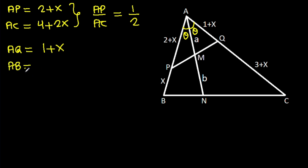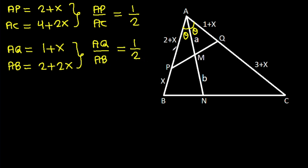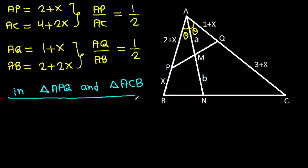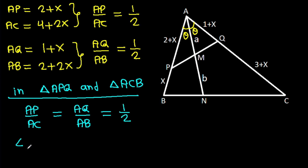And AB is 2 plus X plus X, that will be 2 plus 2X. That means AQ over AB will be 1 over 2. Now, in triangle APQ and triangle ACB, we have AP over AC equal to AQ over AB, that is 1 over 2, and angle PAQ is equal to angle CAB, that is 2 theta.